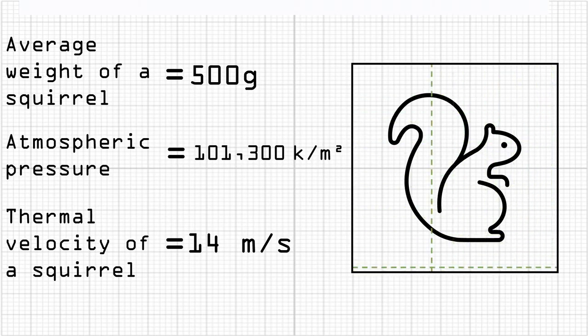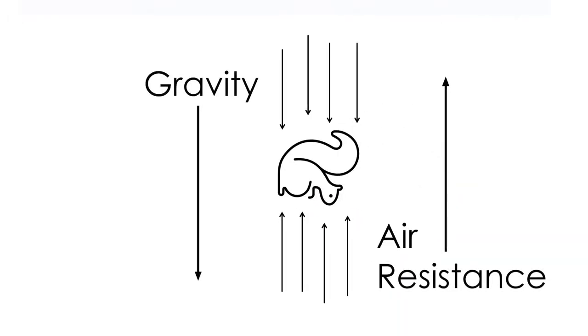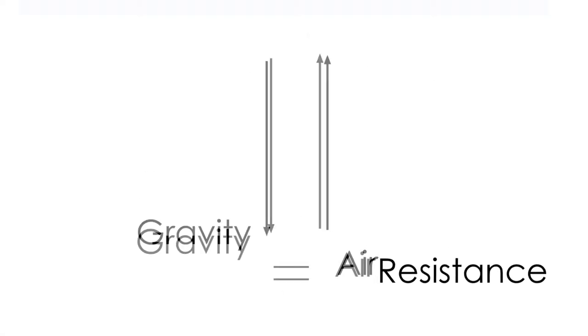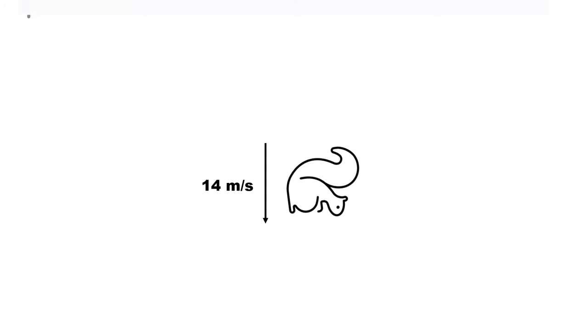But what is terminal velocity? Well, when gravity equals air resistance, the squirrel can't go faster because there's air in the way that won't move out, even for a fat little squirrel. That's the 14 meters per second maximum speed a squirrel can go.